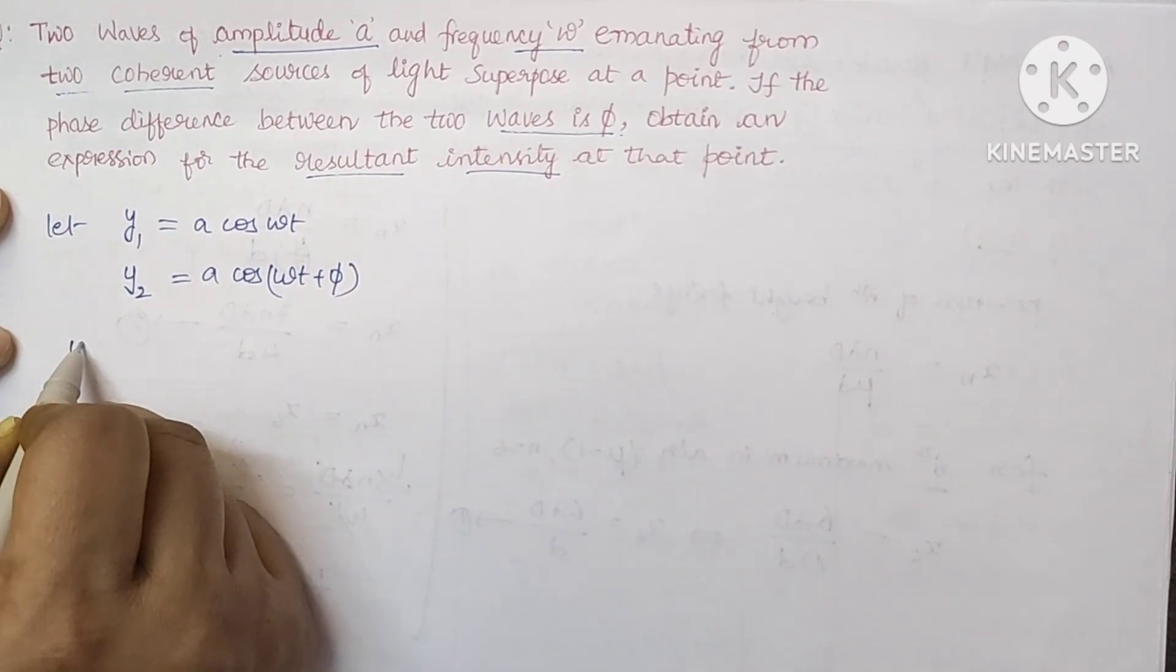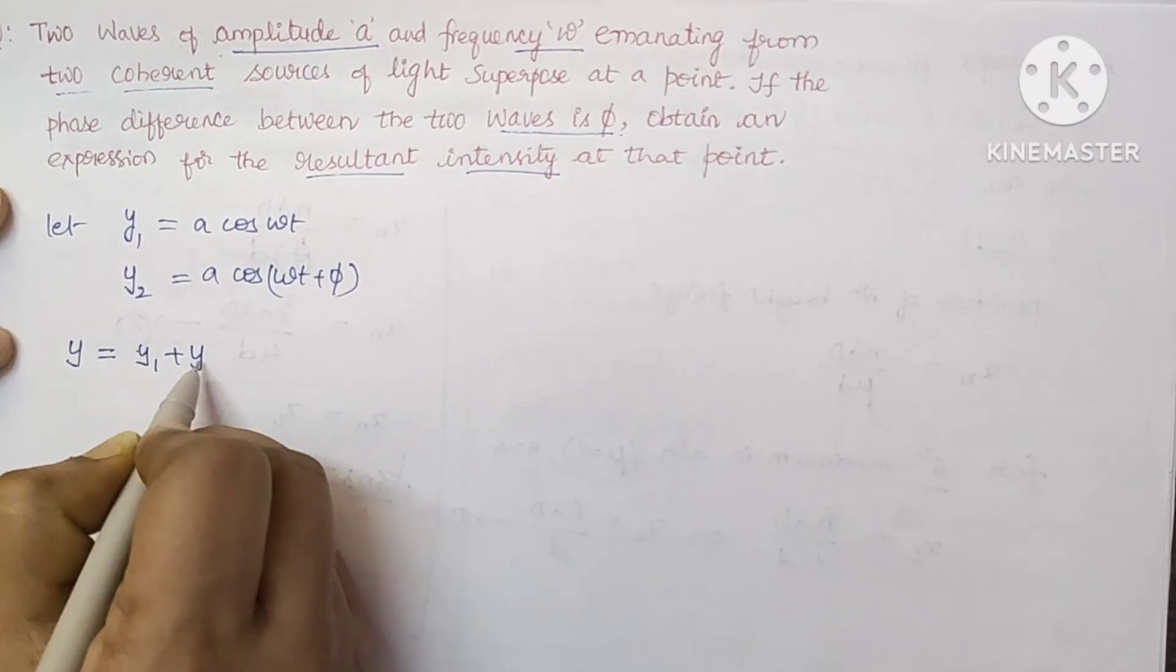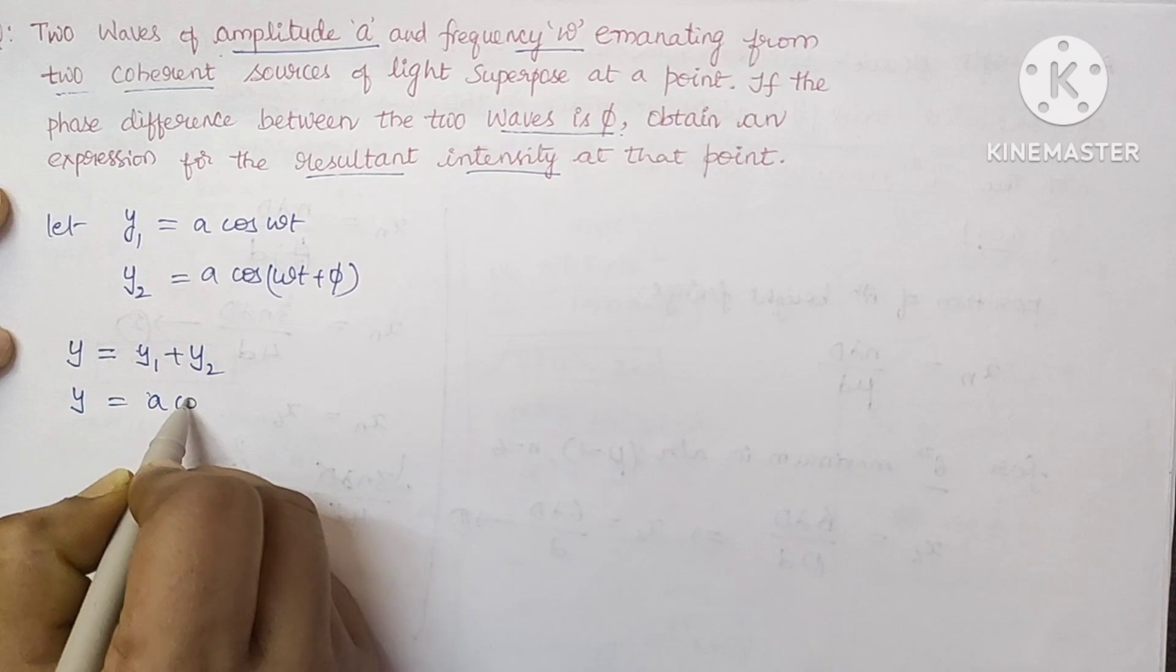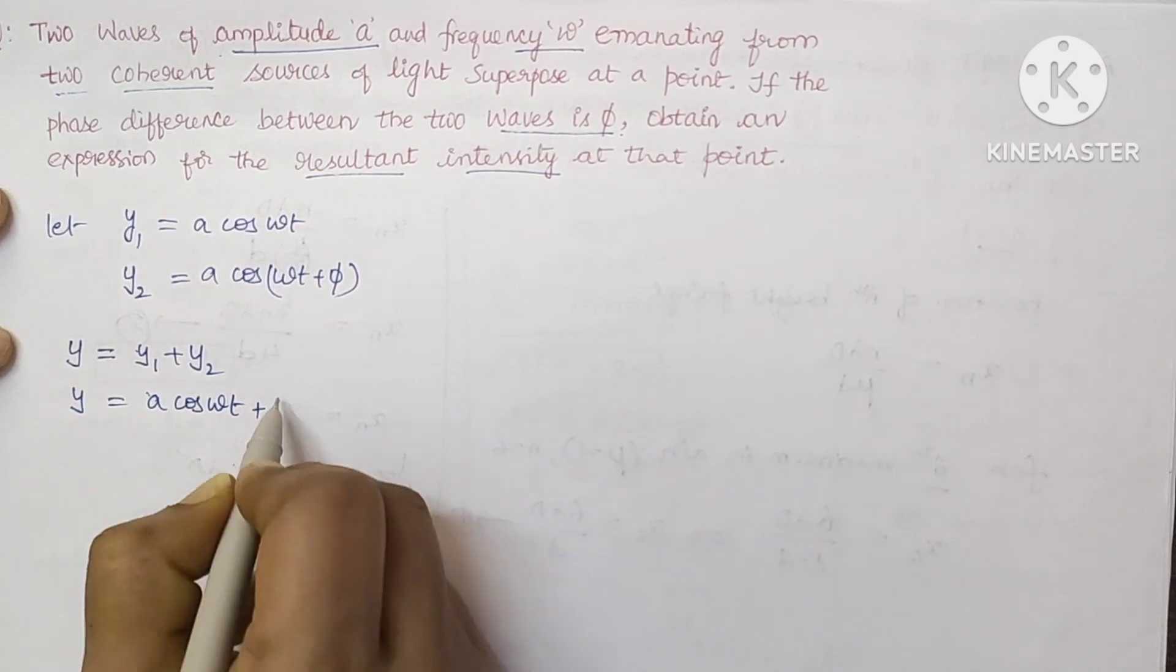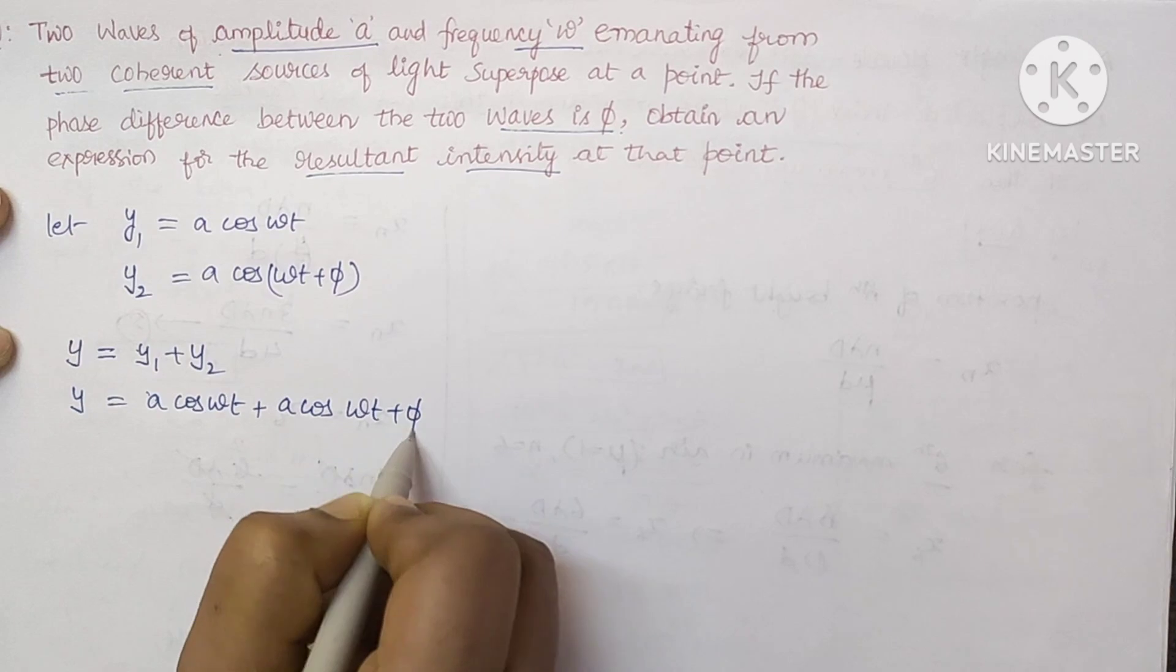Now we have to find the resultant wave which is equal to y1 plus y2. Substitute the values of y1 and y2: A cos omega t plus A cos omega t plus phi.